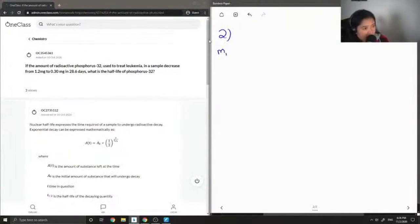We know that our initial mass is 1.2 mg, and we know that our final mass is 0.3 mg. And we also know that the time that it took to get to 0.3 mg was 28.6 days.